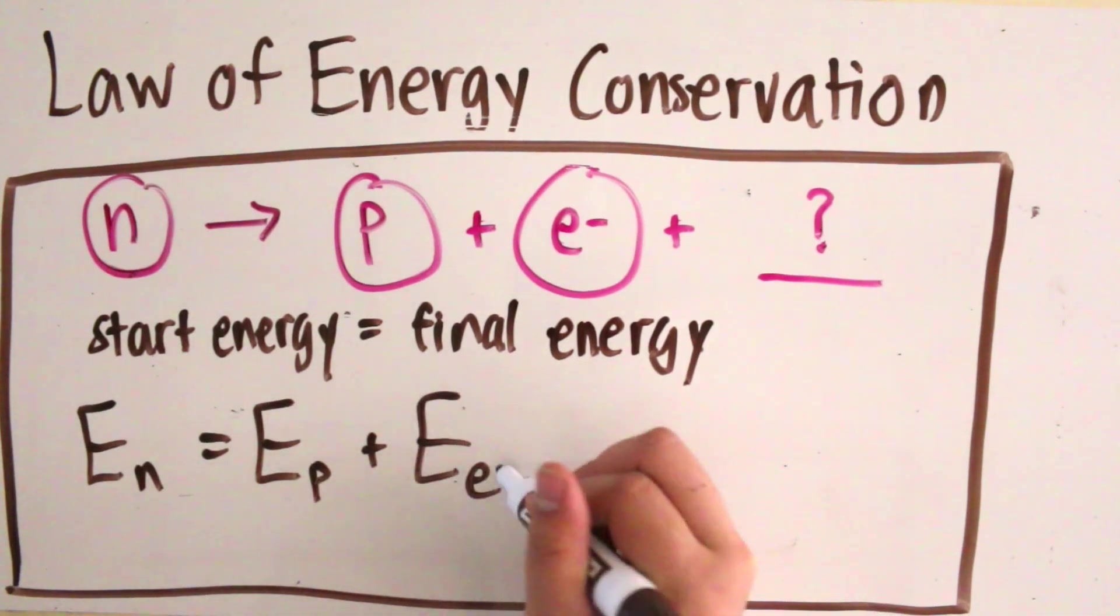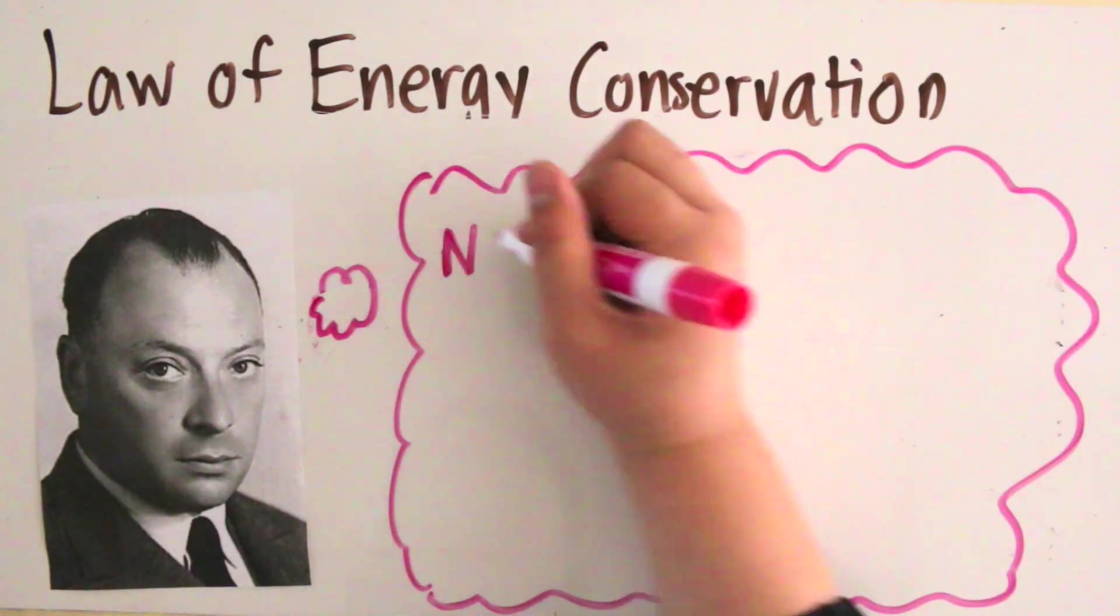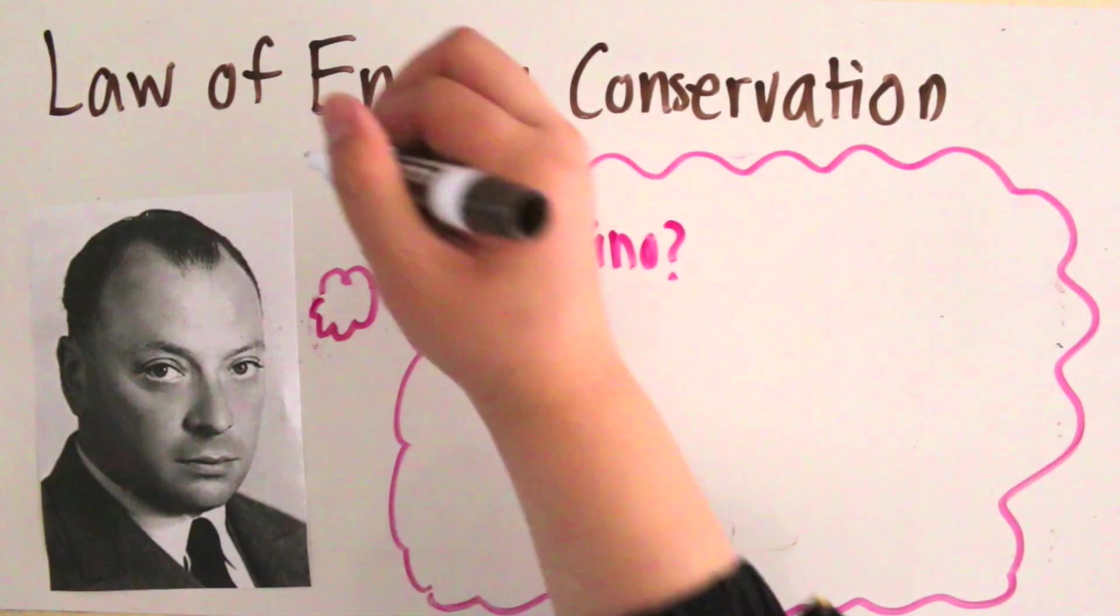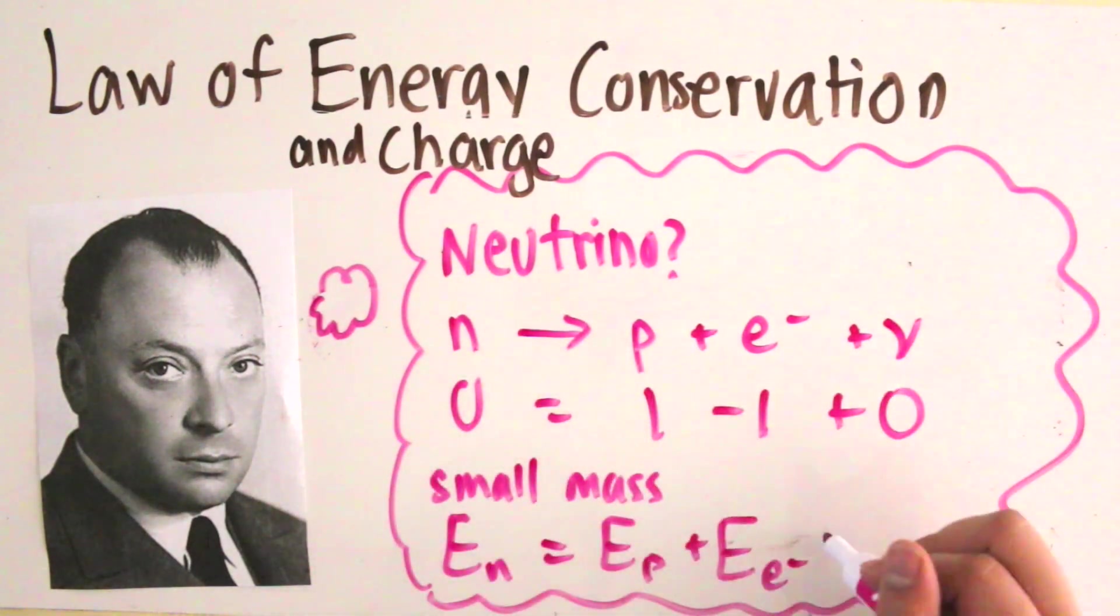The sum of the energy of the proton and electron was missing a small amount of energy. So he hypothesized the neutrino, a small neutral particle that would not violate conservation of charge and would account for the missing energy as well.